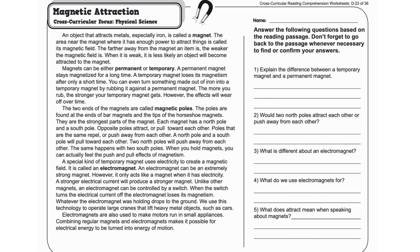A stronger electrical current will produce a stronger magnet. Unlike other magnets, an electromagnet can be controlled by a switch. When the switch turns the electrical current off, the electromagnet loses its magnetism. Whatever the electromagnet was holding drops to the ground.